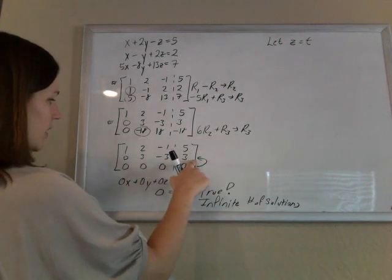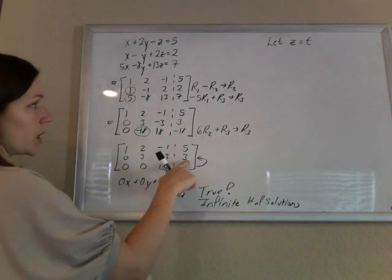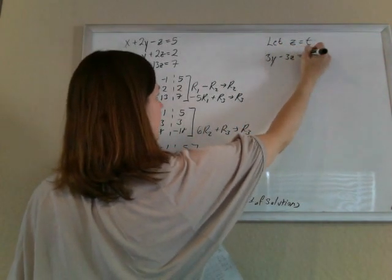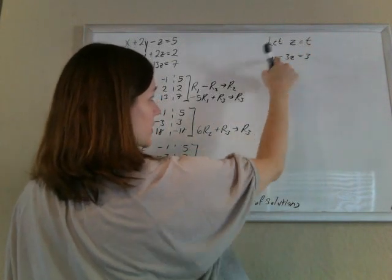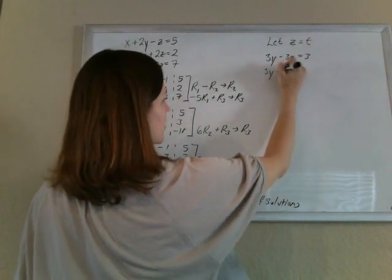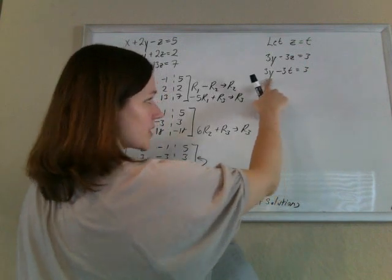And this equation here means that 3y minus 3z equals 3. So 3y minus 3z equals 3. So I'm going to solve. I know that z is t. So 3y minus 3t equals 3. And I'm just going to solve for the y.